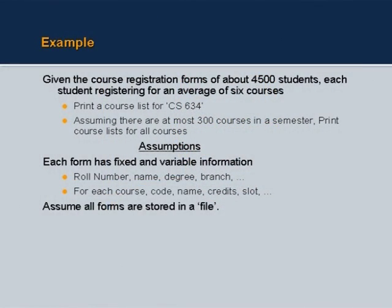Imagine all of you as students enrolled in IIT with a roll number, and courses offered each semester for which you register. Each course has a course score, and on average about six courses are registered per student. You are given the course registration form for about 5,000 students. Assuming at most 300 courses in a semester, the task is to print the course list for all courses given all the registration forms. Each form has fixed information — roll number, name, degree, branch — and variable information for each course: course code, name, credits, and slot.